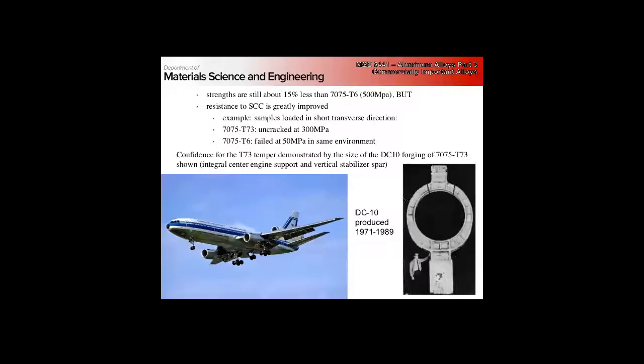If we age at the higher temperature of 160 to 170, we get not as high of a yield strength, but better resistance to stress corrosion effect. This T73 heat treatment is a really important commercial application of the thermodynamics of nucleation and growth. This was used to great success in the 70s to produce very large forged pieces like this DC10 structural members.